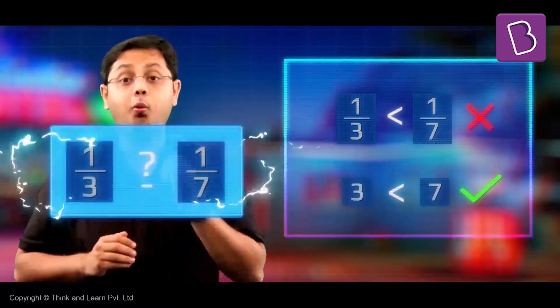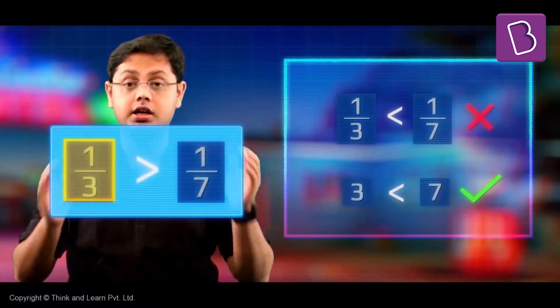I expected that. You can't compare fractions like you will compare numbers. Actually, 1 by 3 is bigger than 1 by 7. Let me show you how. For now, I will use visuals to explain better. Let us do it using numbers a little later on.